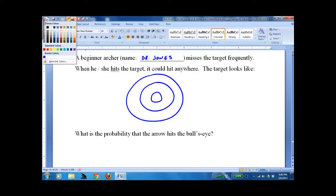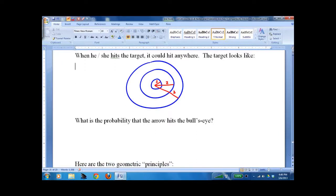The target has radius 1 for the inner circle, radius 2 for the middle circle, and radius 3 for the outer circle. What is the probability the arrow hits the bullseye if it hits the target?